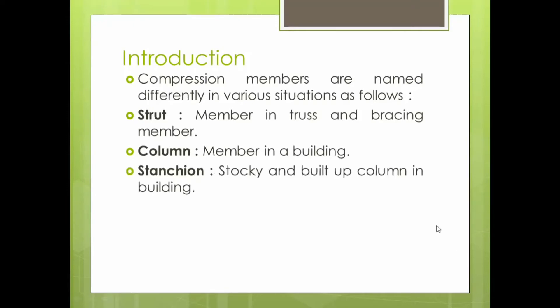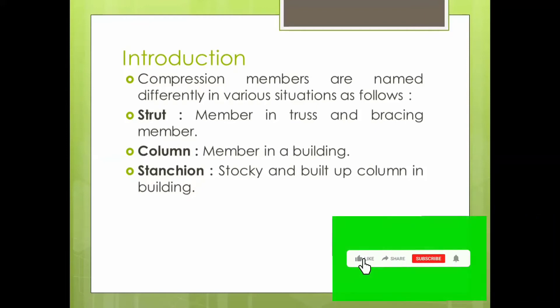Then stanchion — it is a stocky and built-up column in a building. Built-up column means those sections which are made up of two or more different sections, like double angle sections, two angle sections, one channel section with a cover plate, or one I-section with a cover plate. These are known as built-up columns and they fall under the category of compression members.